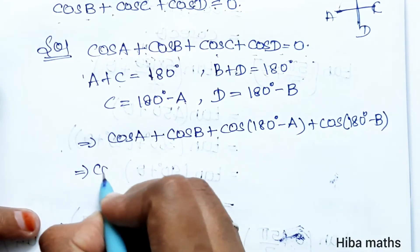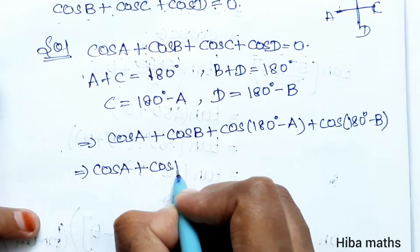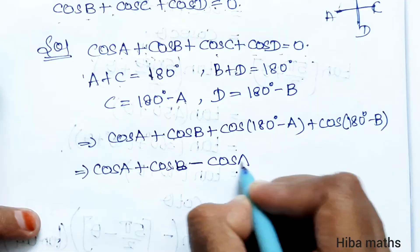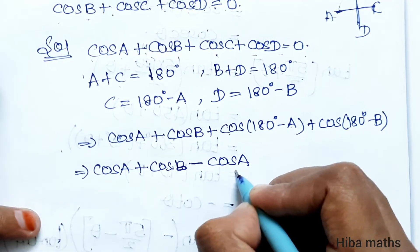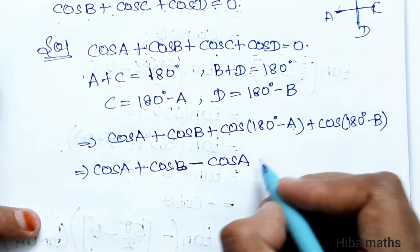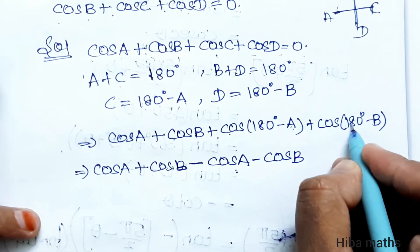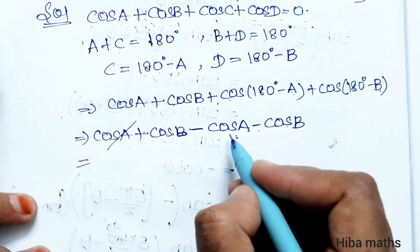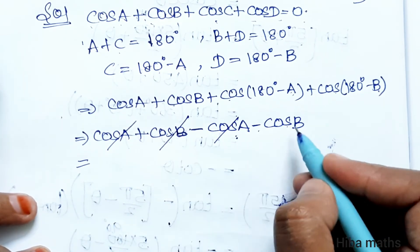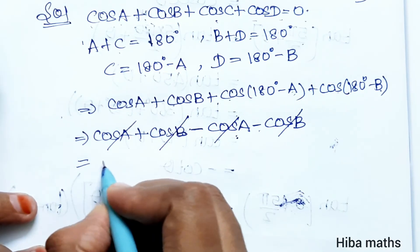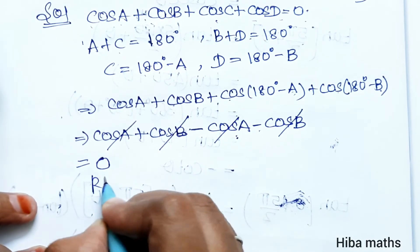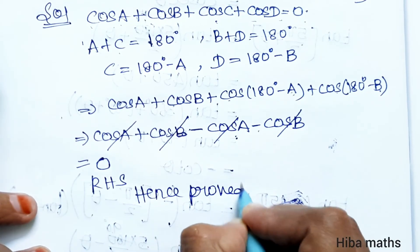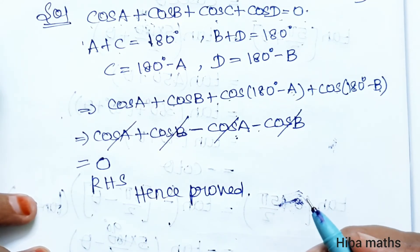Next line, cos A plus cos B minus cos A, because cos 180 minus theta equals minus cos theta, so minus cos A minus cos B. Plus cos A minus cos A cancel, plus cos B minus cos B cancel, so the value is 0. This is RHS, so proved. Hence proved. Thank you so much for watching.